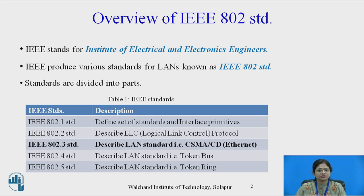IEEE 802.3 describes the LAN standard CSMA/CD, which is also known as Ethernet. IEEE 802.4 describes the token bus LAN standard, and IEEE 802.5 describes the token ring. There are several standards described by IEEE 802, but in this session we are mainly focusing on IEEE 802.3, that is Ethernet.